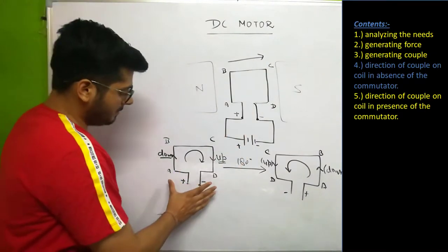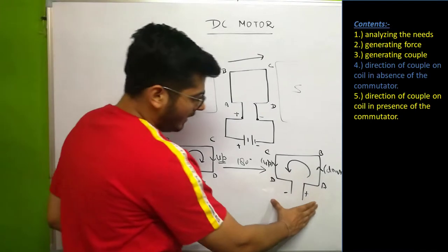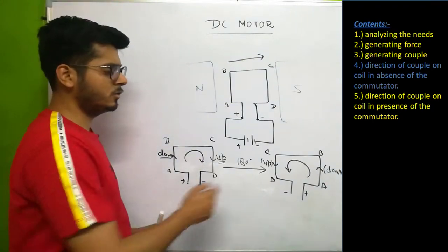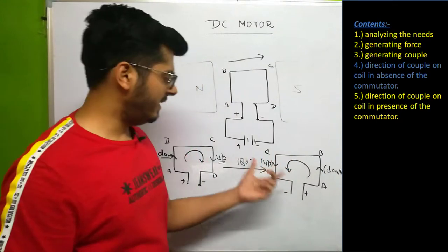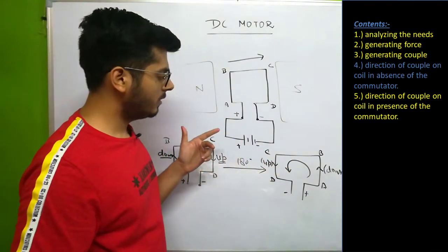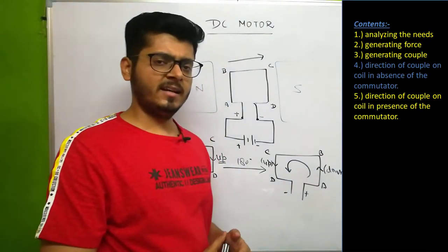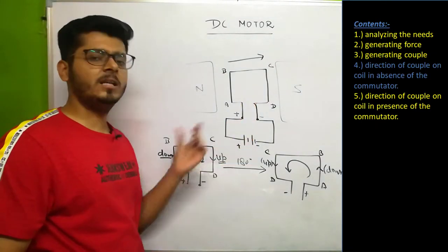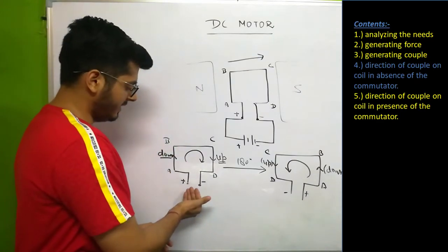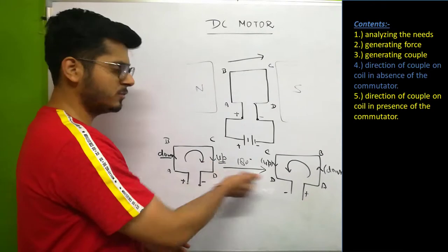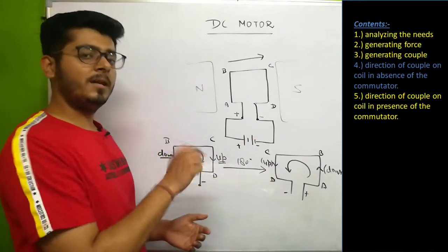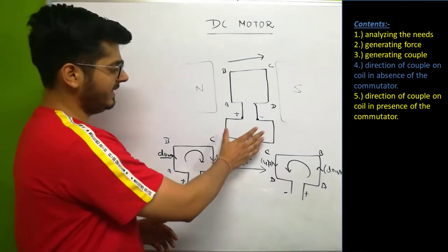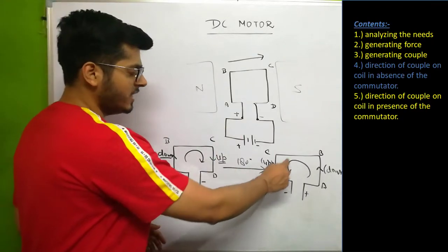Our motor will not work because the couple is not acting on the body in the same direction. We need some mechanism that can avoid this switch of current direction. If we use that arrangement and the current remains in the same direction, we would get the same magnetic force and the same couple in the second case as well.